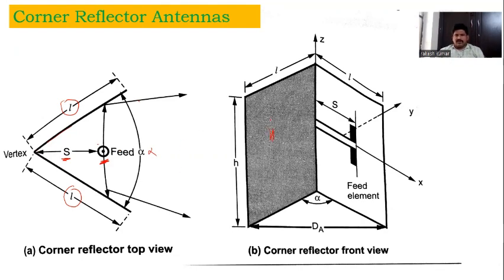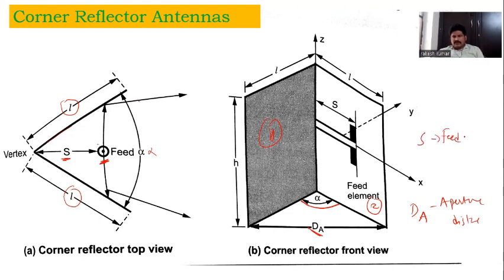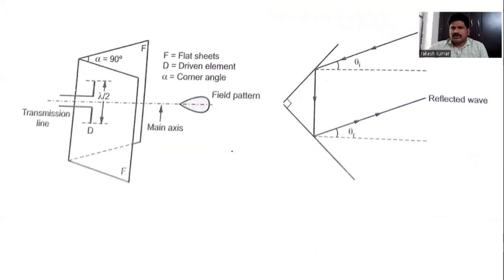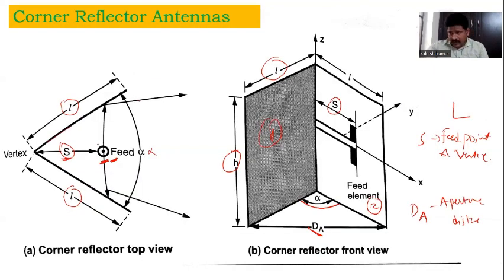This is the front view. Sheet number one and sheet number two — the angle between them is called the corner angle. DA is the aperture distance. S is the distance between the feed point and the vertex. L is the length of the sheet, and H is the height of the sheet.